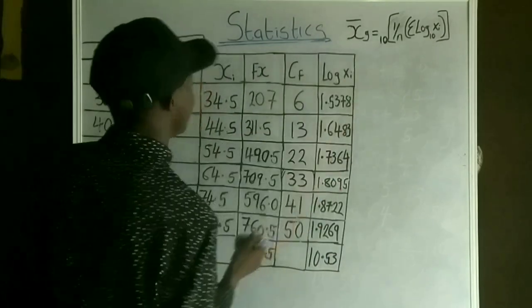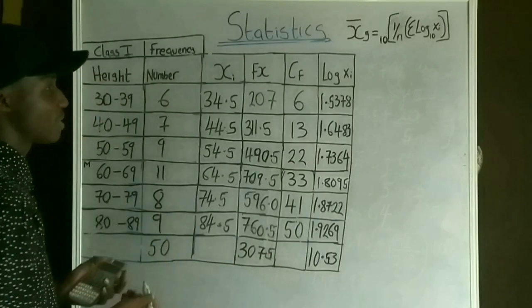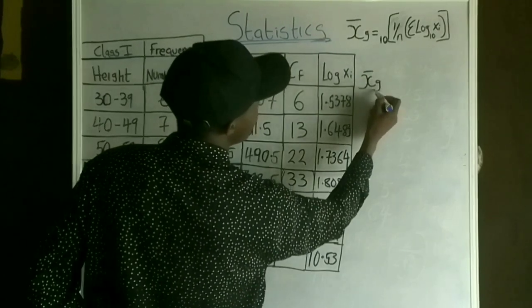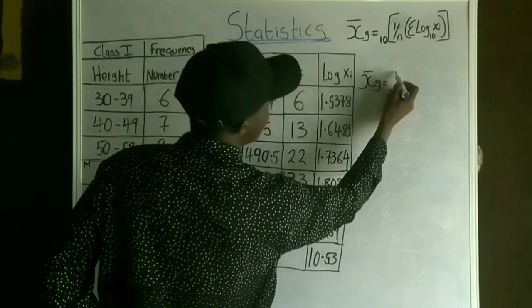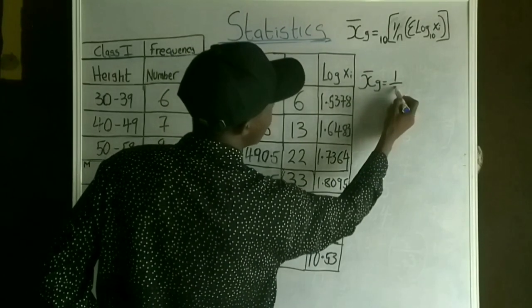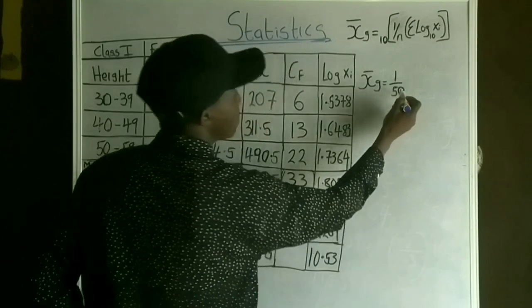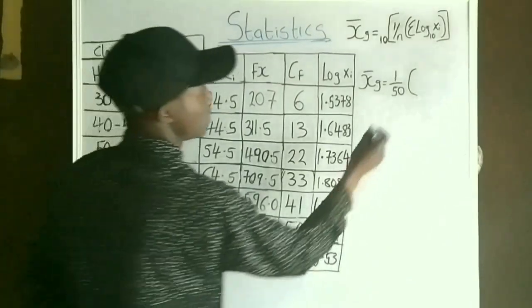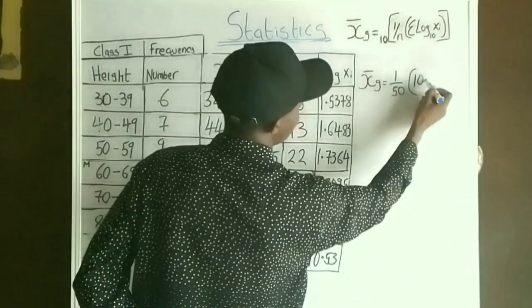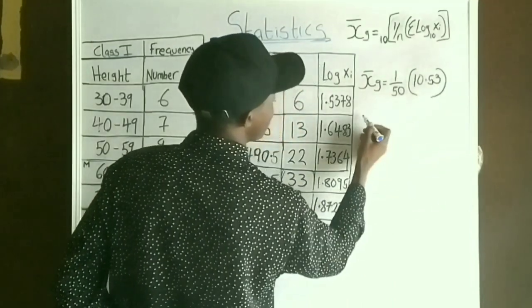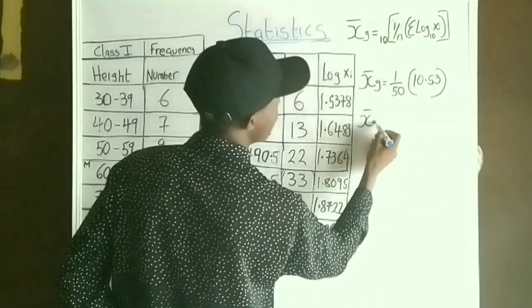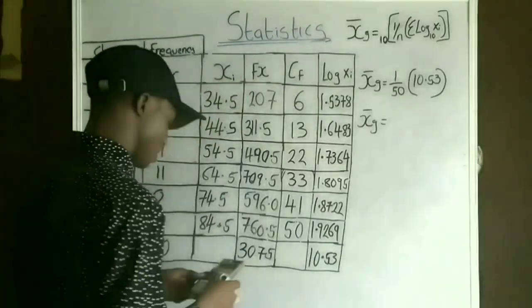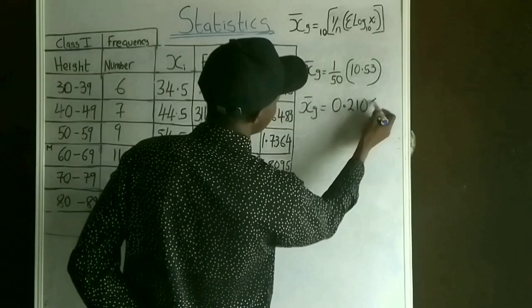n is the total number of plants, which is 50. The geometric mean = 10 raised to (1/50 × 10.5) = 10 raised to 0.2106.